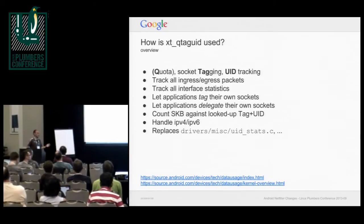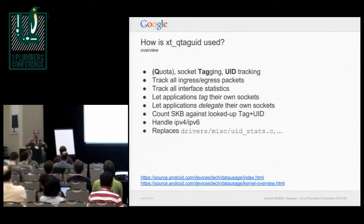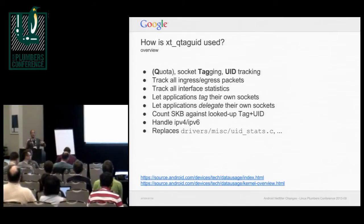The Android OS can come in and say, I'm switching this app from foreground to background. Instead of going through IP tables and changing rules, QtagUID has a very simple interface where you can just poke and flip the counters, and flip them back. The interface we use for this is procfs, chosen because it was needed for debugging, but we left ourselves the opportunity to switch to sysfs, IOCTLs, or some other mechanism.